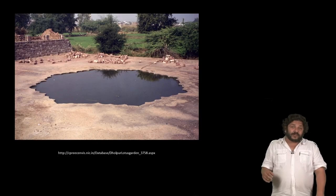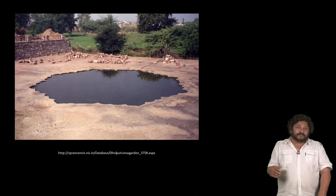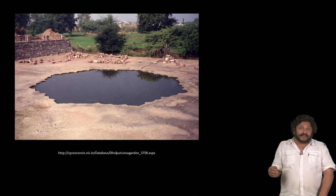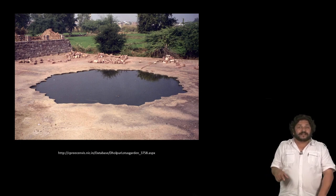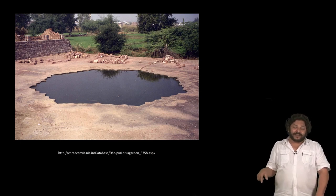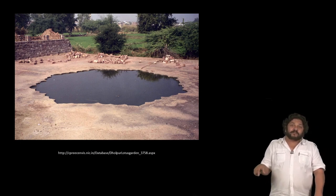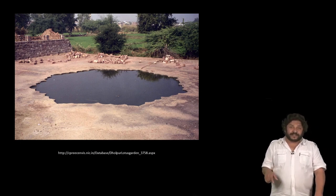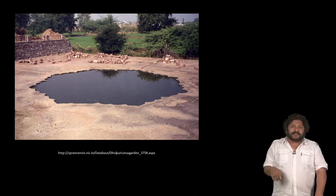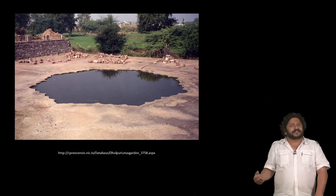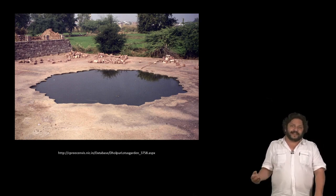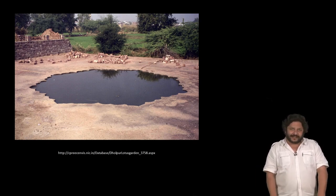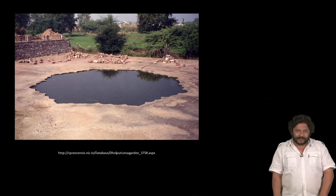Babur also built in Dholpur a small pool called the Hauz-i-Kausar, or the pool of lotuses, carved in the yellow Dholpur rock. Not much of it survives and certainly nothing of the gardens that were laid around it.